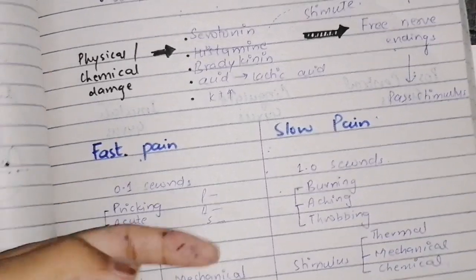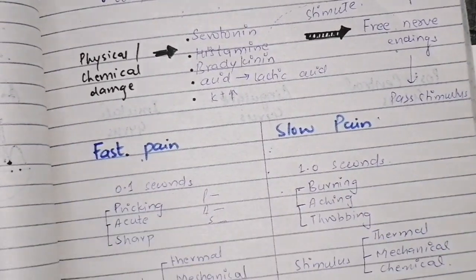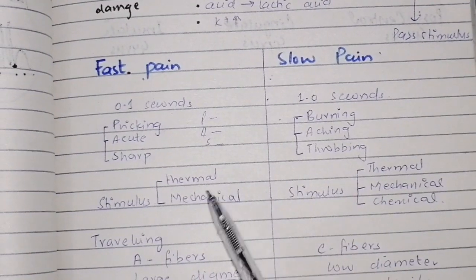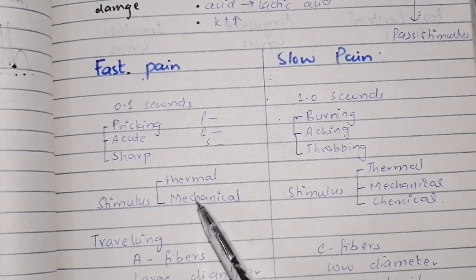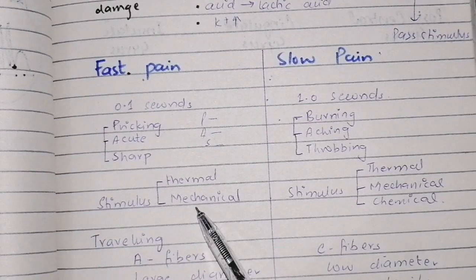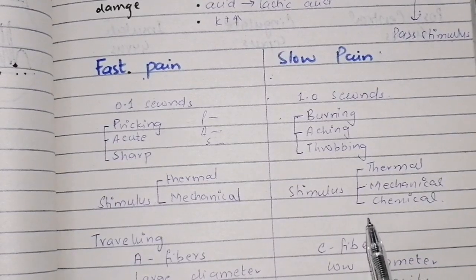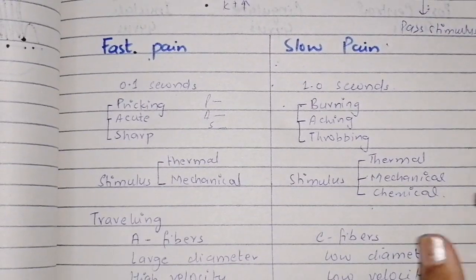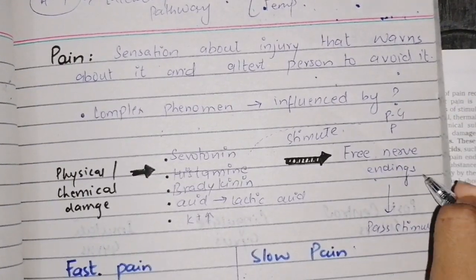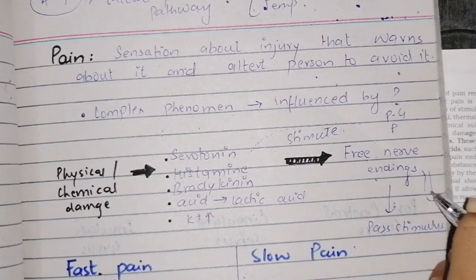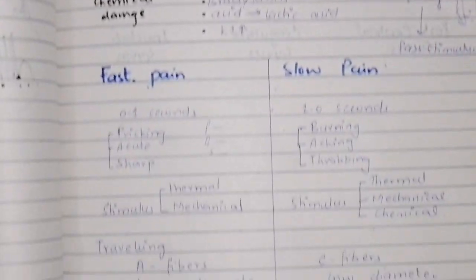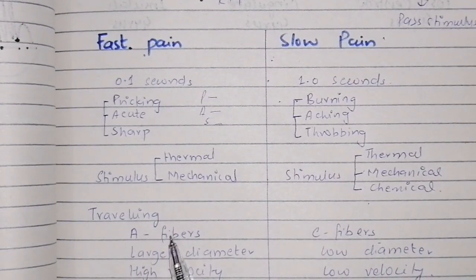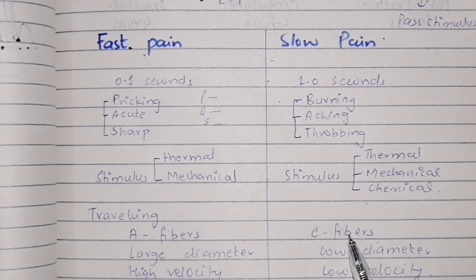Fast pain reaches our brain quickly, whereas slow pain does not reach the brain as fast — that is the key difference. Fast pain can be caused by thermal or mechanical stimuli, while thermal, mechanical, and chemical stimuli can all cause slow pain. When free nerve endings are stimulated, pain is transmitted toward the brain via two different fibers: fast pain fibers are called A-delta fibers, and slow pain fibers are called C fibers.